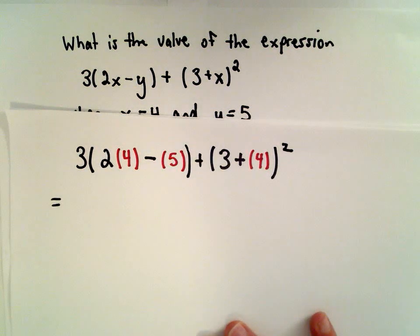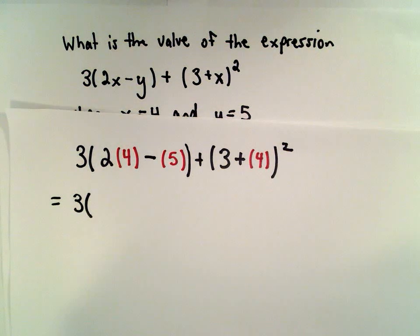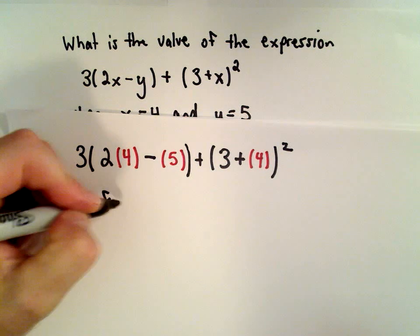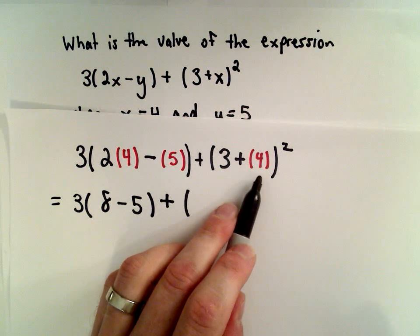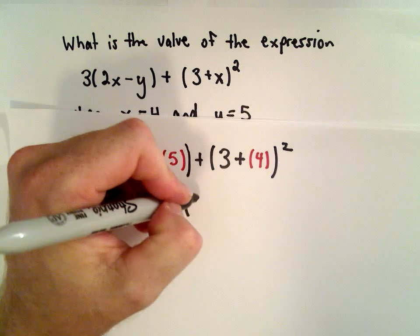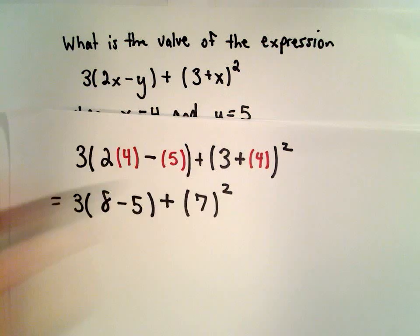So now I'm going to simplify here. 2 multiplied by 4, that's going to give me 8 minus 5 is just hanging out. Here we've got 3 plus 4, 3 plus 4 is going to be 7, and it still has to be squared.